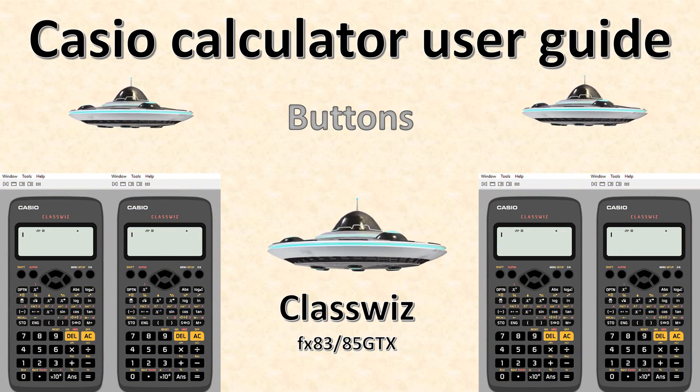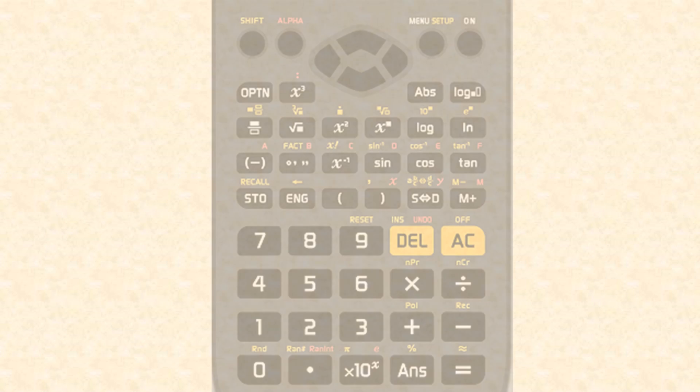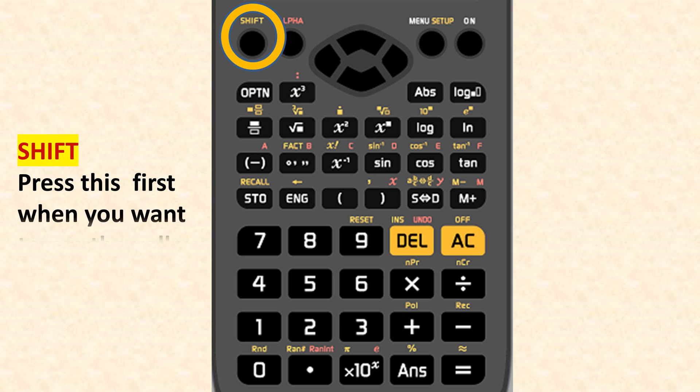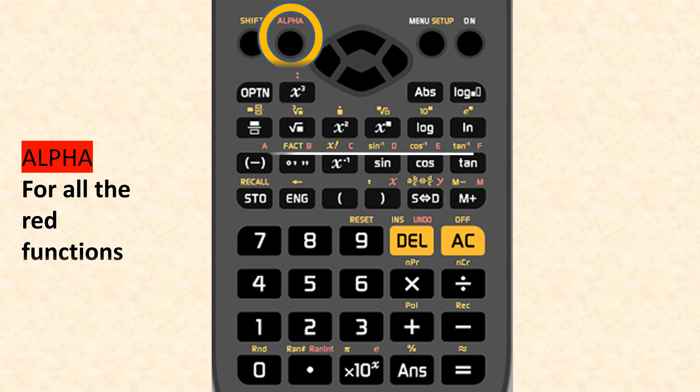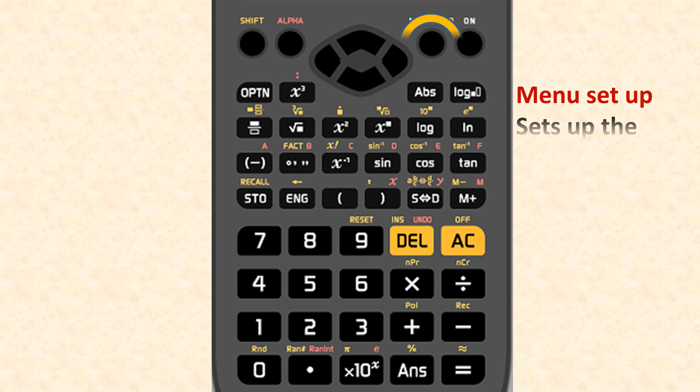Casio calculator user guide, looking at the buttons and their functions. Press the shift key to access any yellow functions, then the alpha key to press all red functions. These are the arrows to help you move across the screen and edit.